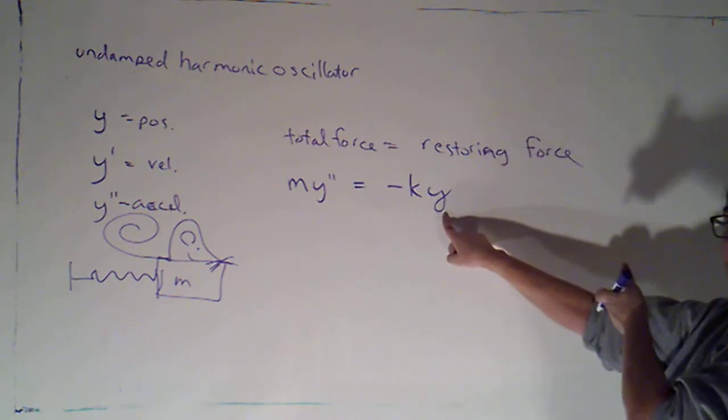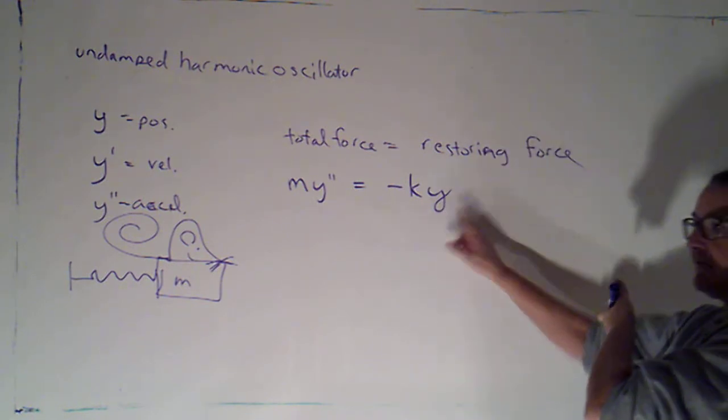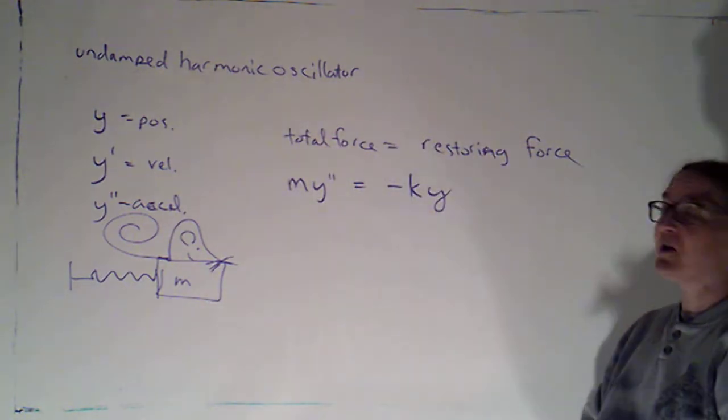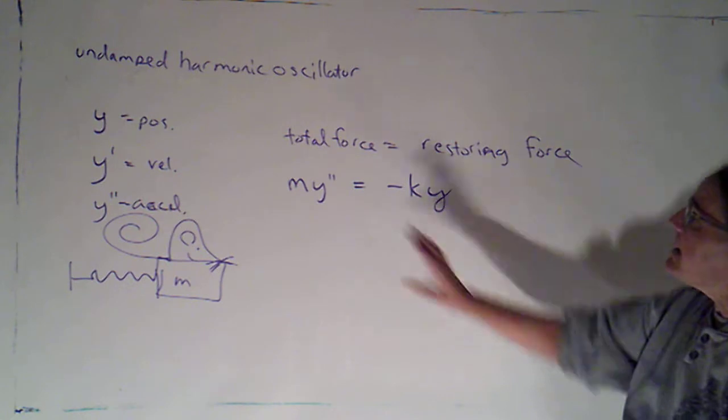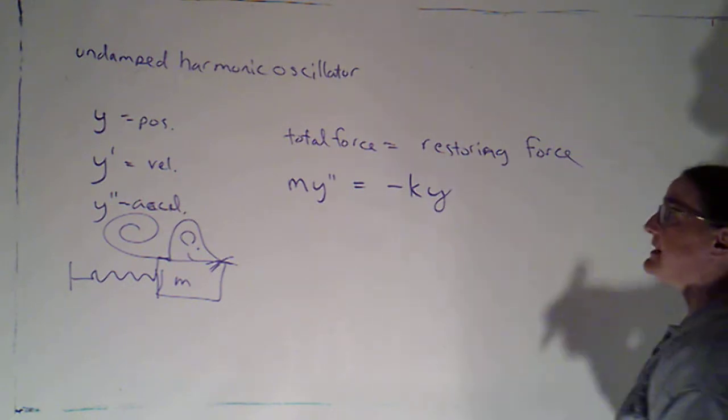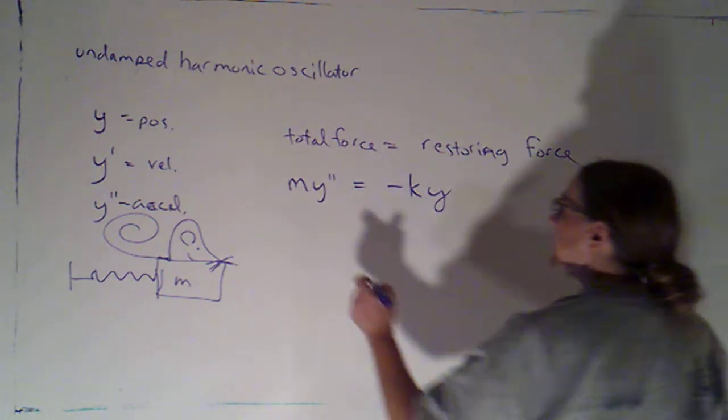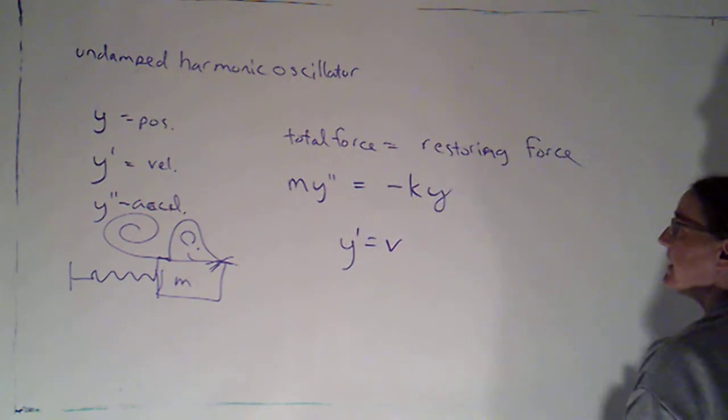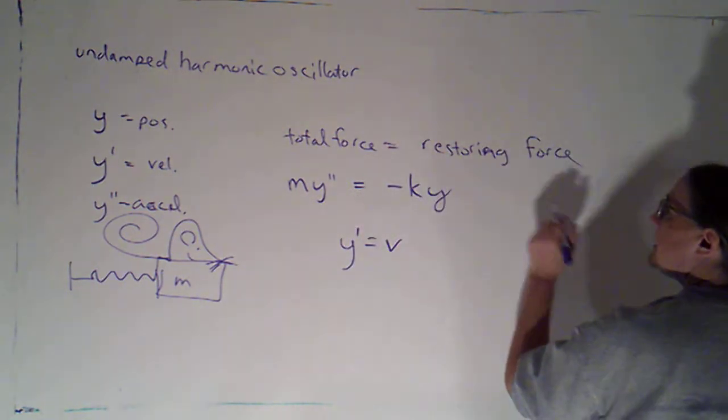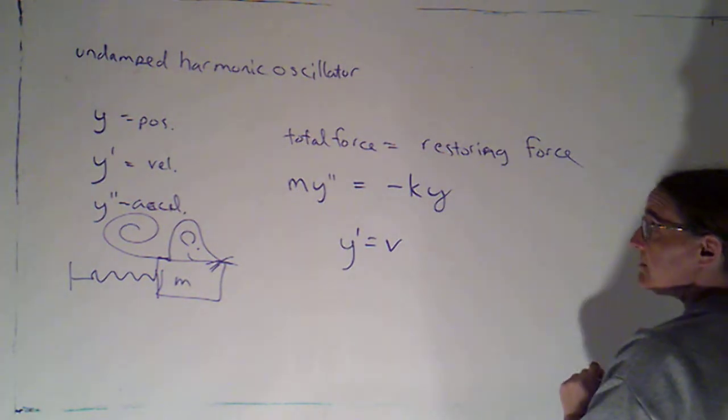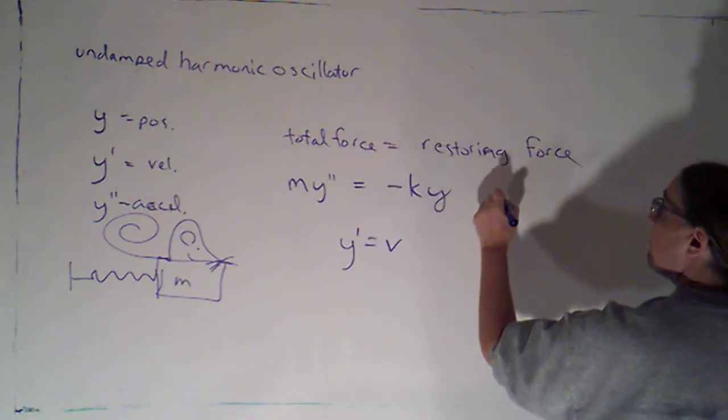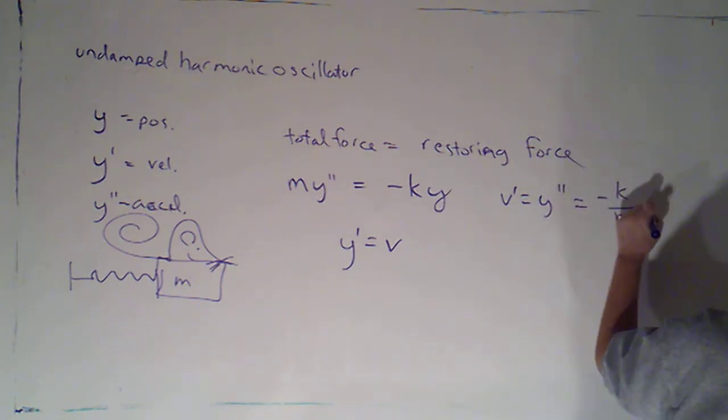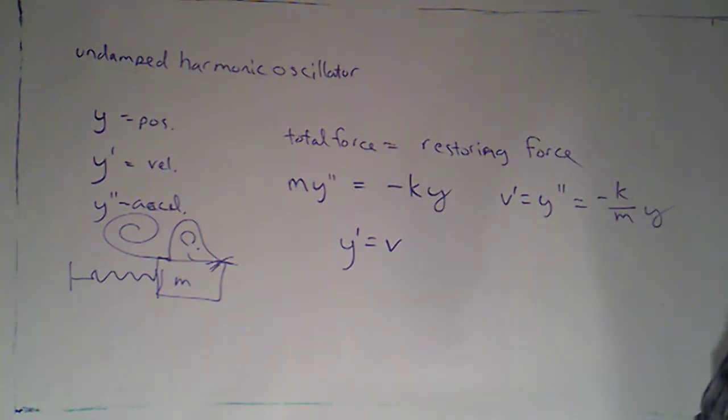Remember if y is in a positive position, the restoring force will be acting in the negative direction because it's trying to restore us to a rest position. So, if I then form the corresponding system, we let y prime equal v, and then I know that y double prime is just v prime. So if I solve for this, v prime is y double prime, which is just negative k over m times y.